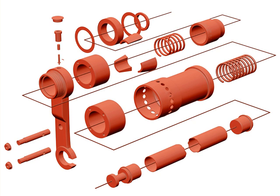A full set of production drawings may contain detail, assembly, sub-assembly, working assembly, and diagram drawings that are all used to depict the final product.